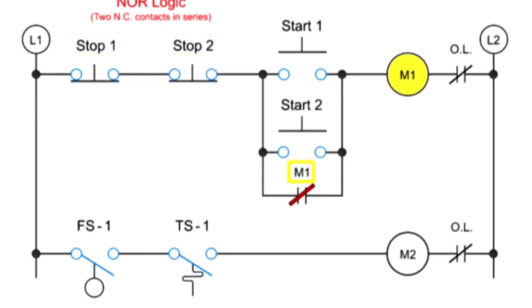In this arrangement, pushing stop button 1 or stop button 2, the M1 coil is shut off, and the M1 holding contact is deactivated.